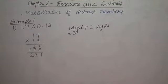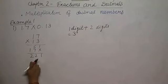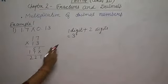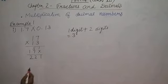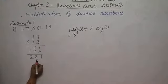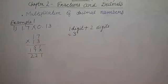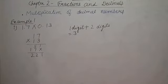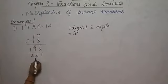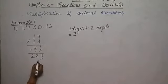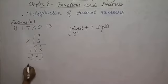So what do you do for decimal placement? From the right-hand side, count the digits. How many digits do we count? Three digits. Let's count: one, two, three.